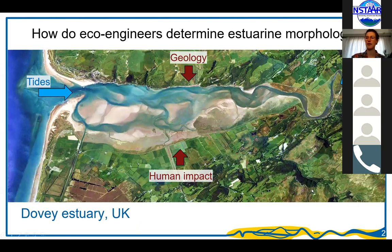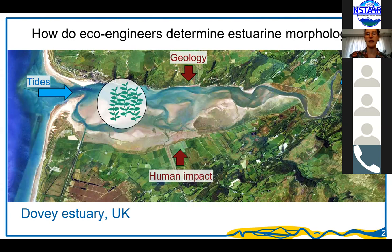The background of my PhD and this presentation is that we would like to understand how the morphology of estuaries forms and what constrains it. Estuaries are obviously not only driven by boundary conditions and constraints from geology or human impact, but there are also many species living in the estuary that affect morphological development. This is precisely the topic of my PhD. We call these ecoengineering species, and today I will focus on salt marshes — the biostabilizing species.